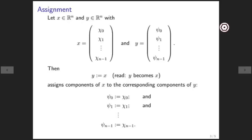The operation is y becomes x. We write this as colon equal to distinguish this from the equal, which has to do with equality. So we say this as y becomes x.